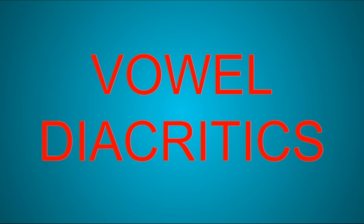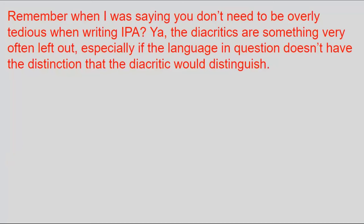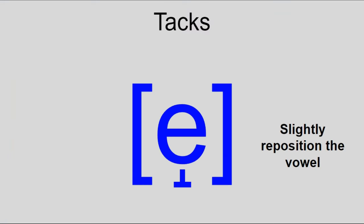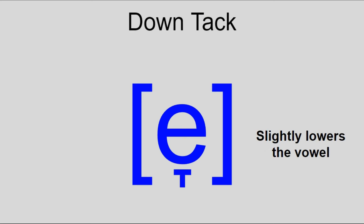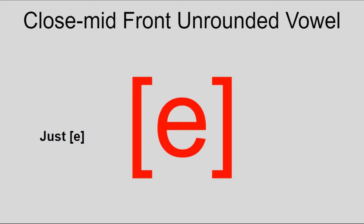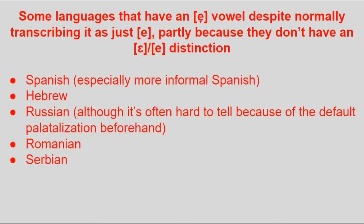Now that we've seen the vowel characters, it's time for the vowel diacritics. Starting with those that slightly reposition the vowel — these are normally omitted since languages often don't have distinctions involving them. First up are the tacks, which go under the letter: the up-tack slightly raises the vowel, and the down-tack slightly lowers the vowel. For example, there's E, E with up-tack, and E with down-tack. This last one, the mid-front unrounded vowel, despite not having an IPA letter of its own, is actually pretty common — it normally just gets written without the tack.